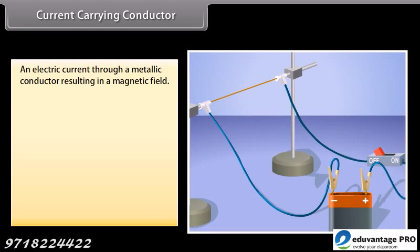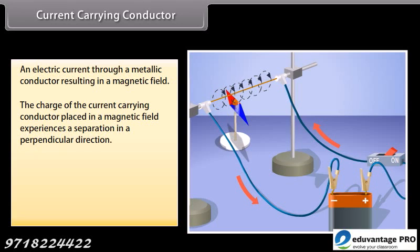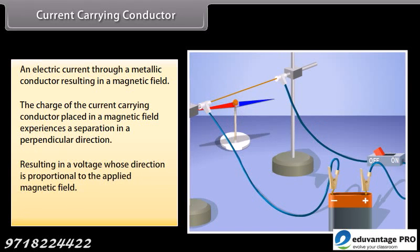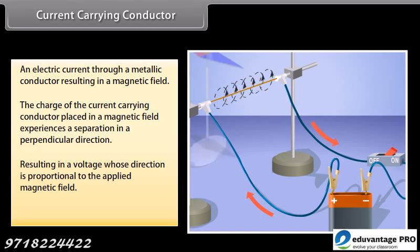Current carrying conductor. An electric current passing through a metallic conductor results in a magnetic field being created around it. The charge of the current carrying conductor placed in a magnetic field experiences a separation in a direction that is perpendicular to the current and the magnetic field. This results in a voltage whose direction is proportional to the applied magnetic field. This effect can also be reversed.